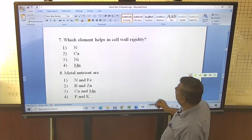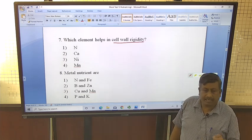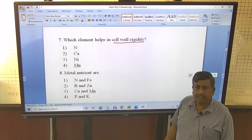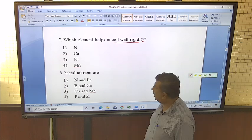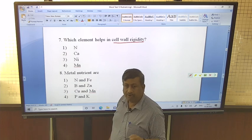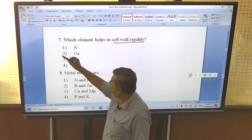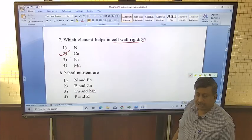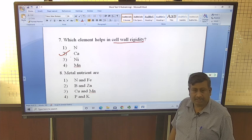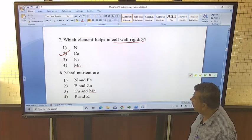Which element helps in cell wall rigidity? The nutrient which is present in cell wall contributes to cell wall rigidity and its extension. Calcium and boron both are involved in cell wall synthesis but the major role is of calcium. Calcium is present in cell wall and pectin chains are there and it is linked with this chain.